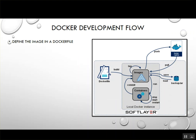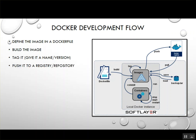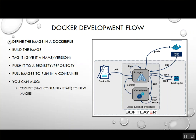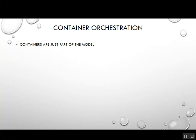Here's the basic Docker development flow. First you define your image in a Dockerfile, then build that image and give it a tag — basically a name so you can refer to it. Then you push it to a registry, and pull it down when you want to run it, building and running the container. You can also commit a running container to create a brand new image, and archive images out to files and load them back in.